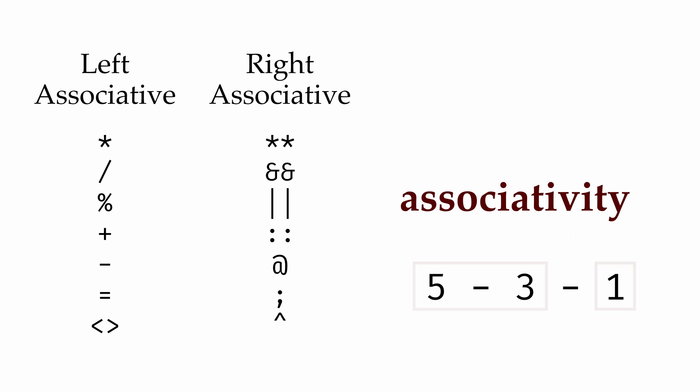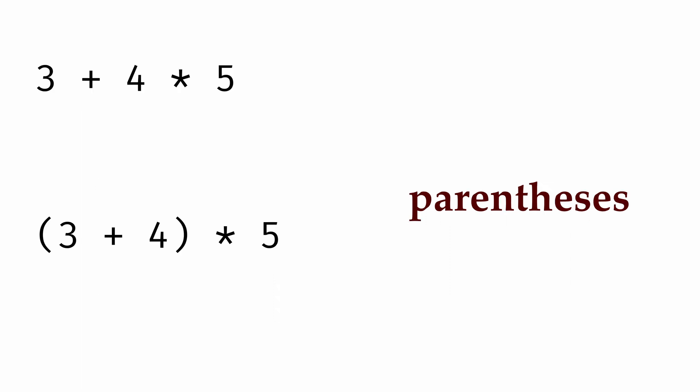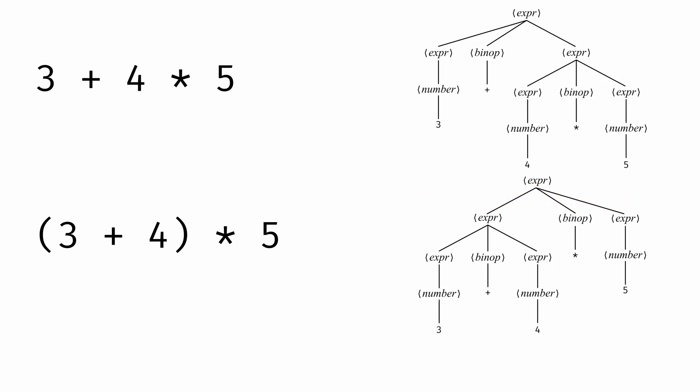If you, the programmer, want to override the precedence or the associativity of the language, you can do so by use of parentheses, so that you make clear what you want the structure of your expression to be. So 3 plus 4 times 5, with the 3 plus 4 in parentheses, will have 3 plus 4 as a sub-expression.